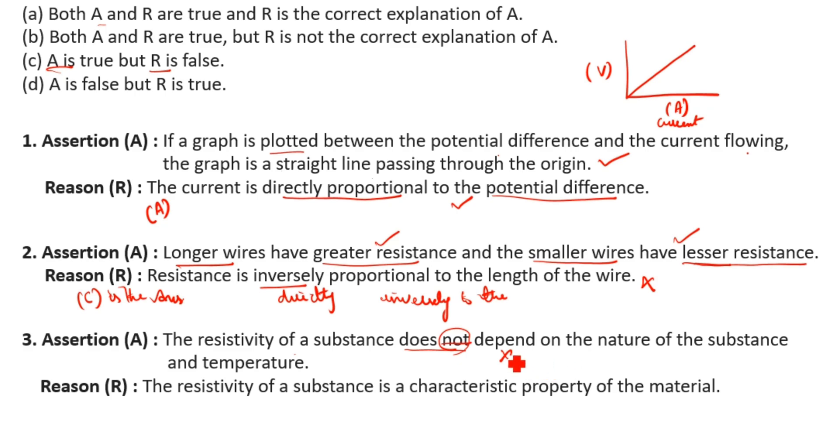Reason R: The resistivity of a substance is a characteristic property of the material. Yes, this is correct. So A is false but R is true, therefore D is the answer.